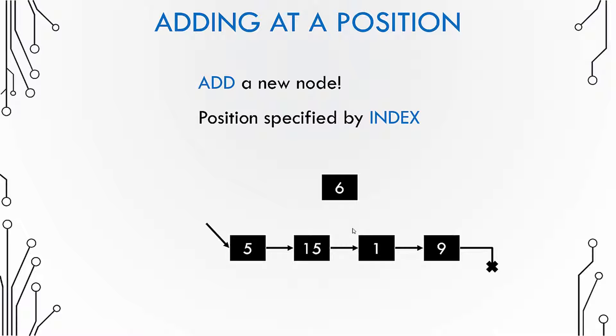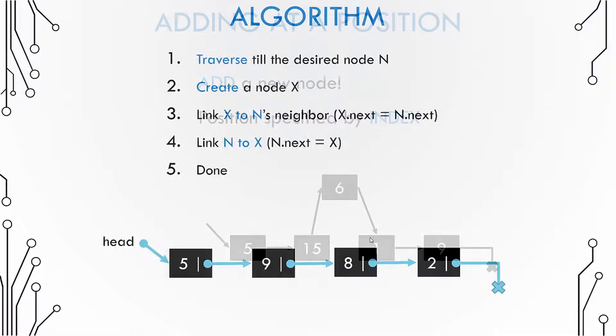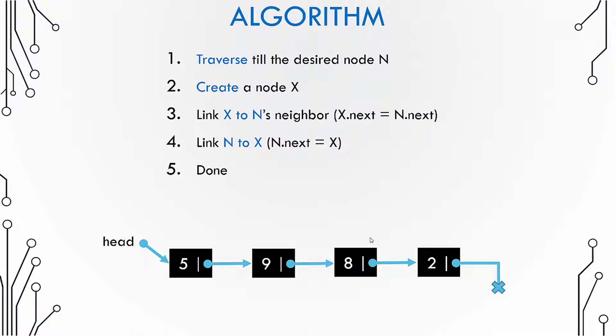So basically the goal is to make changes in such a way that this element 15 points to 6 and 6 points to 1 thereby ensuring the continuity of the linked list. So let us try to see and visualize how this process can happen.